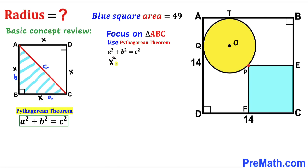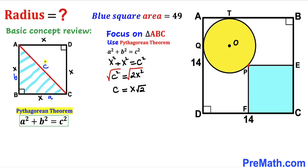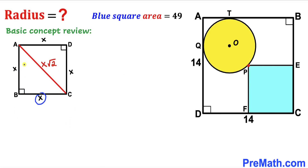Filling in the Pythagorean formula: x² + x² = c², so c² = 2x². Taking the square root of both sides gives c = x√2. Therefore, whenever a square has side length x, its diagonal is x√2. We will use this concept throughout this problem.